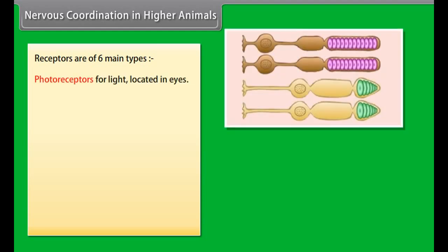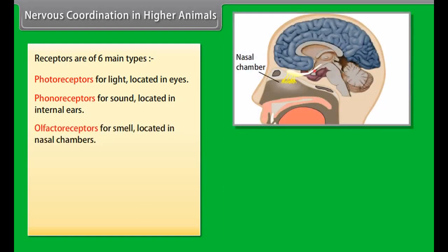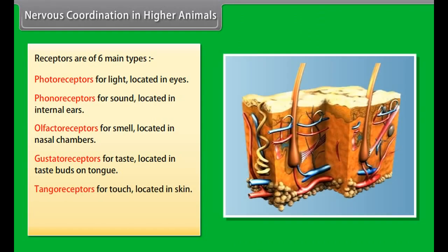Photoreceptors for light, located in the eyes. Phonoreceptors for sound, located in the internal ears. Olfactory receptors for smell, located in nasal chambers. Gustatory receptors for taste, located in taste buds on the tongue. Tangoreceptors for touch, located in the skin. Thermoreceptors for changes in temperature, located in the skin.